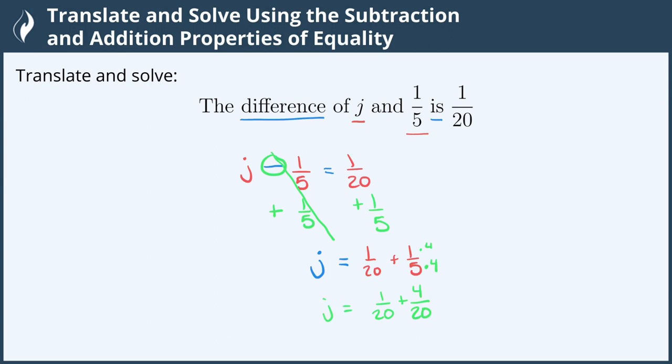So j equals one-twentieth plus four-twentieth. One plus four is five. So we get j equals five-twentieths.